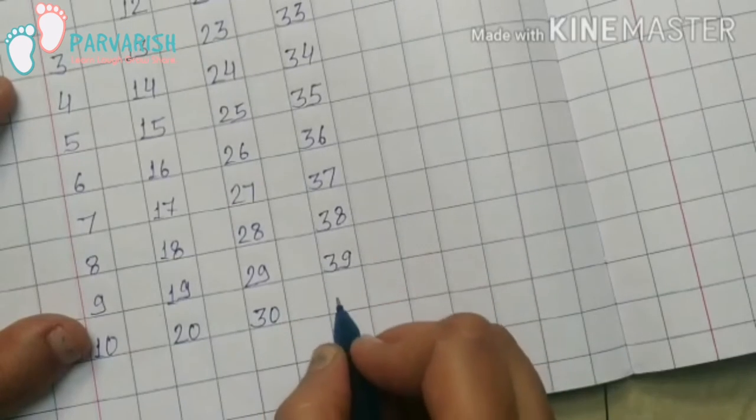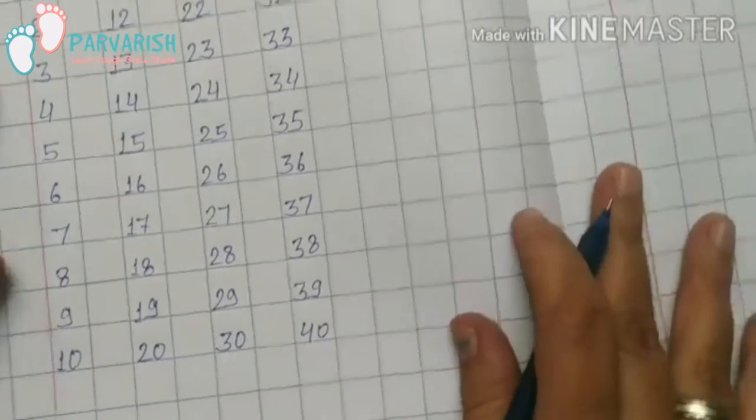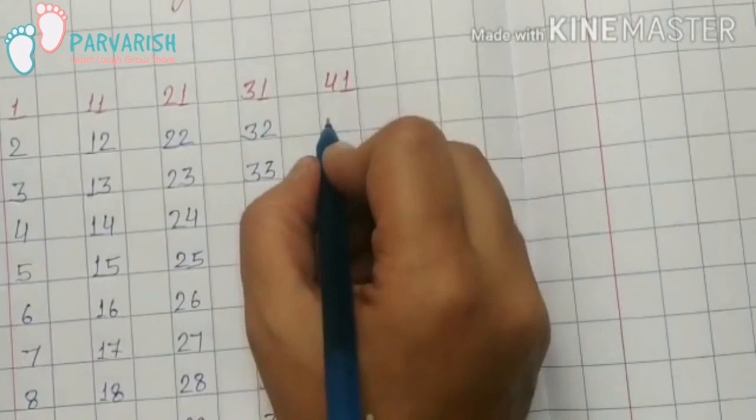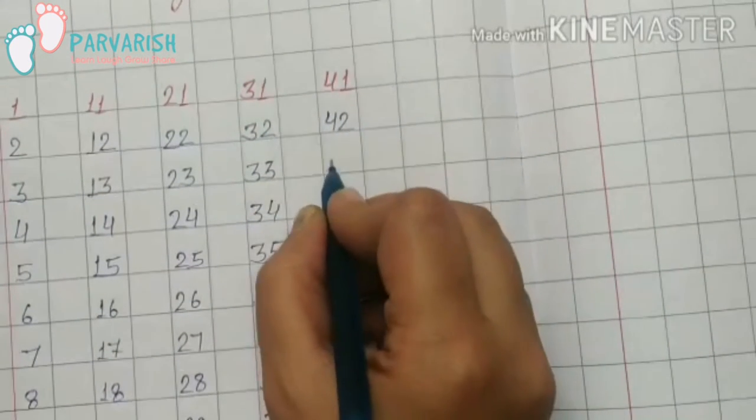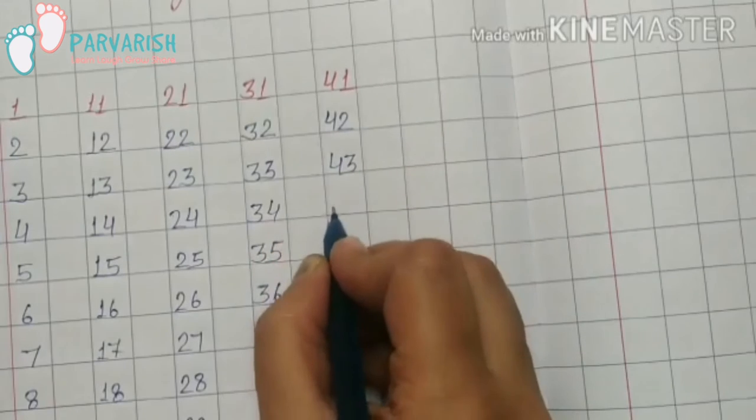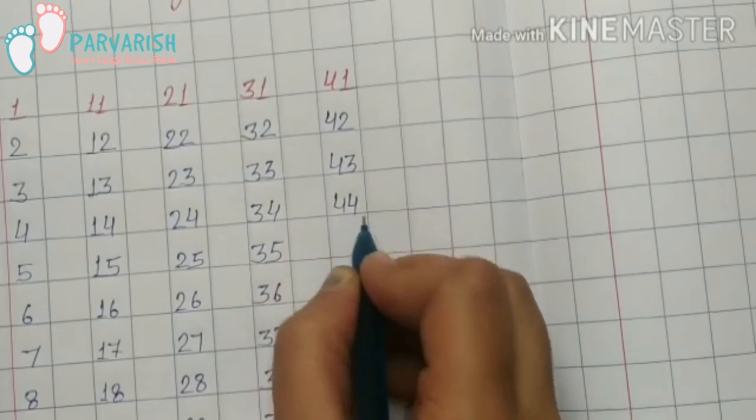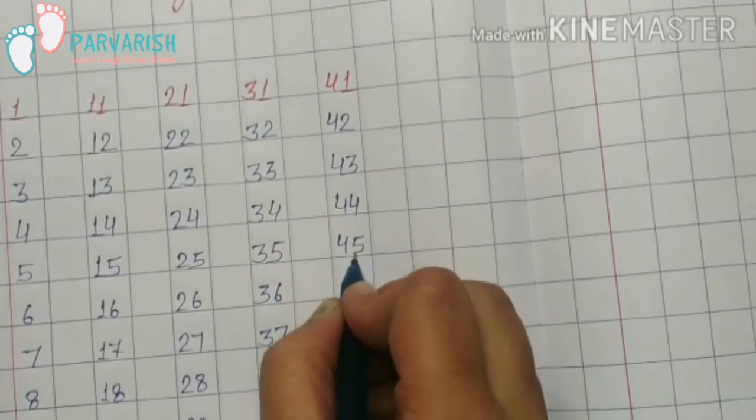3-9, 39; 4-0, 40; 4-1, 41; 4-2, 42; 4-3, 43; 4-4, 44; 4-5, 45.